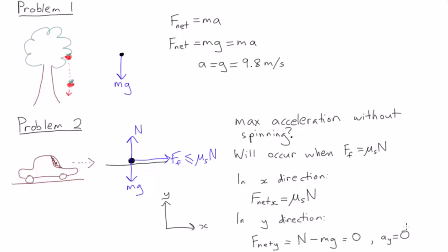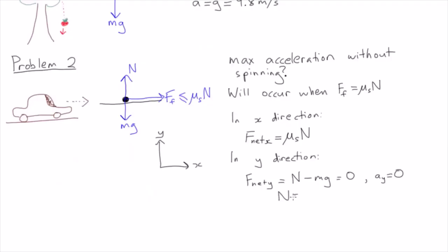And because the car is not accelerating upwards or downwards, the acceleration in the y direction is zero, and so Fnet in the y direction is equal to zero. This allows us to solve for N, which we can then substitute back into our force equation in the x direction. We then apply Newton's second law